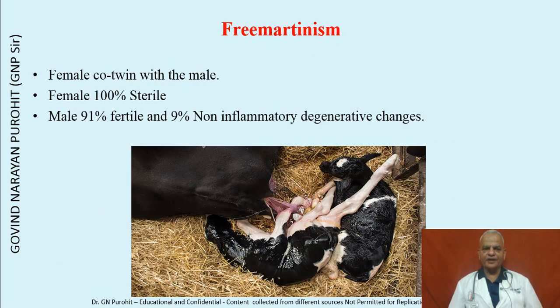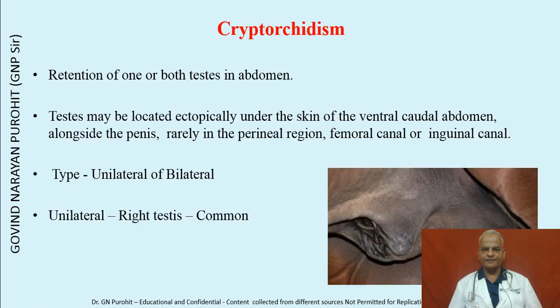Freemartin is a male born co-twin with a female. The female is 100% sterile, while the male is 91% fertile and 9% may show non-inflammatory degenerative changes.